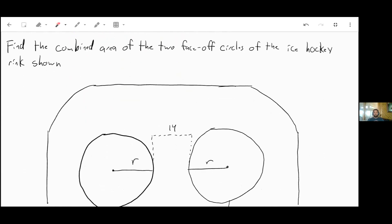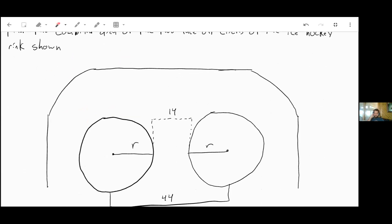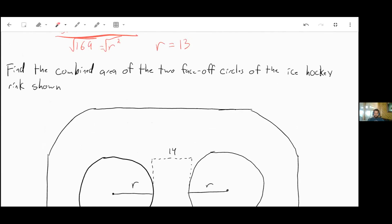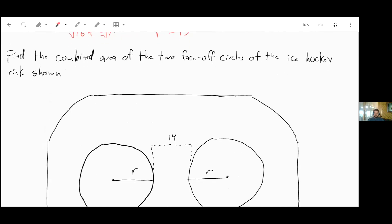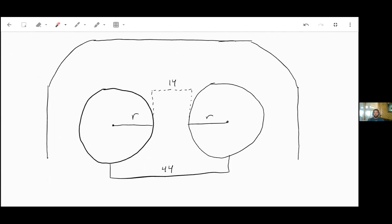So not sure if any of you like hockey. But here's a sort of a rough outline of what the far end of a hockey rink looks like. Between your two faceoff circles, you have a distance of 14 feet. And from the center of each faceoff circle to the center of the other one is a distance of 44 feet. We want to find the combined area of the two faceoff circles together. Well, that means we need to figure out what the radius of one circle is.